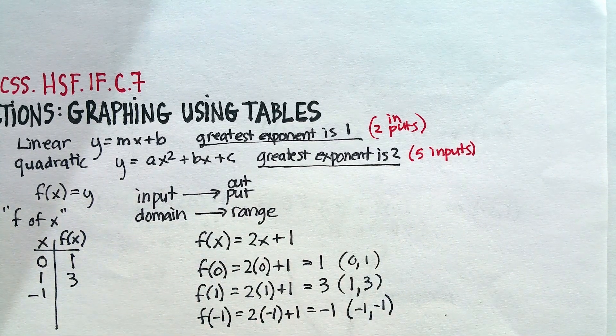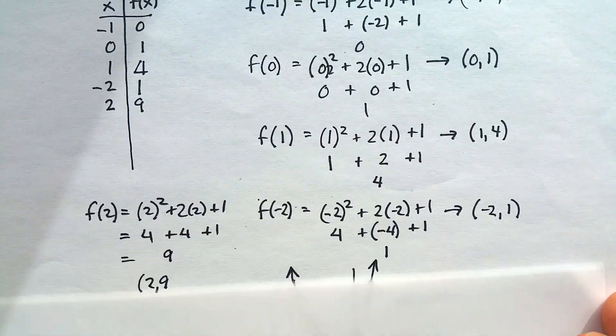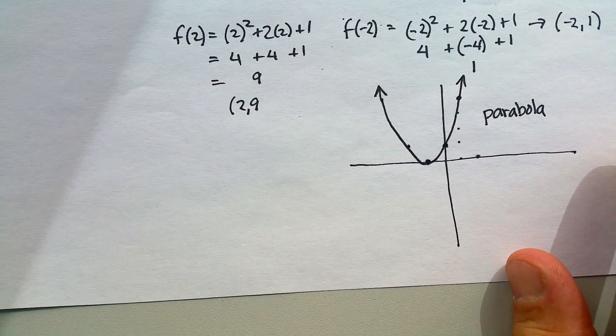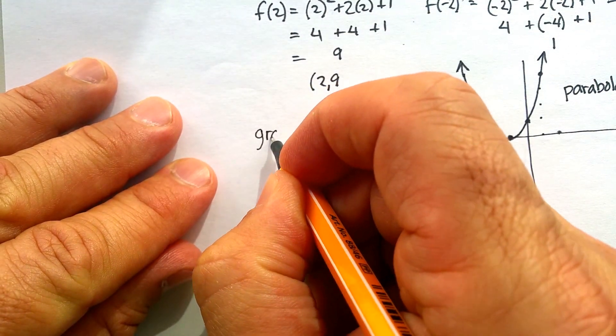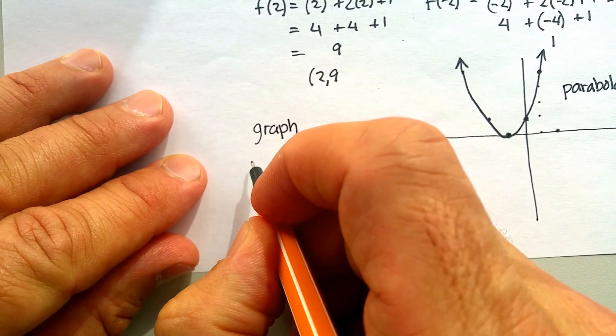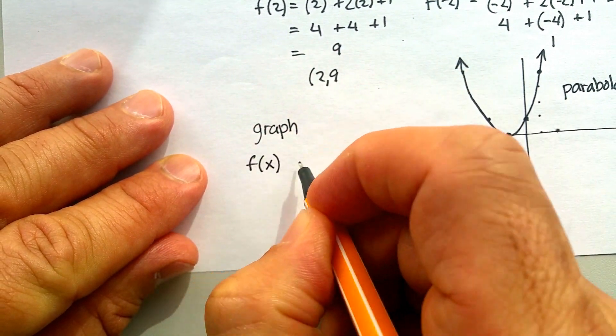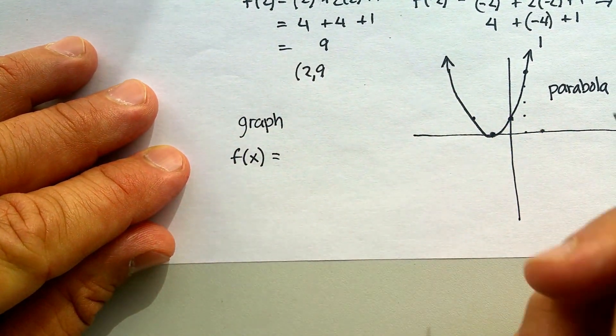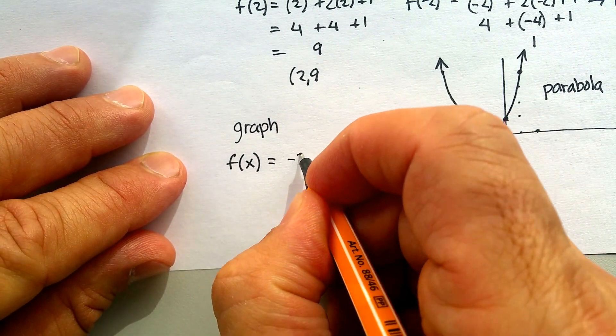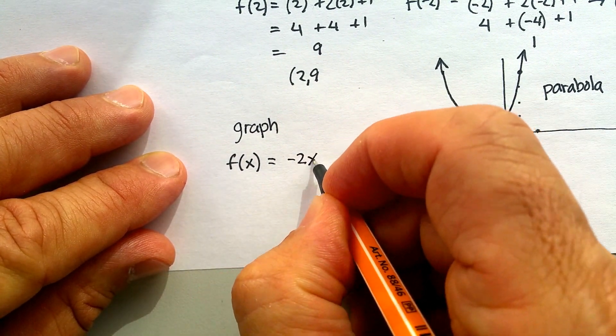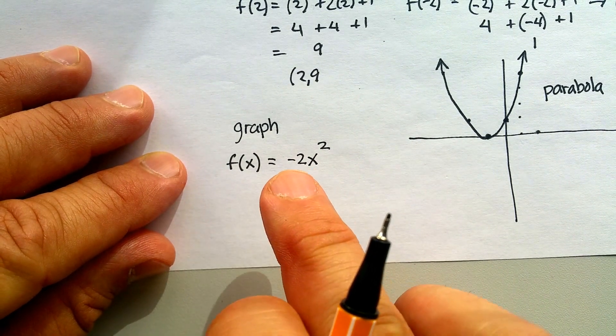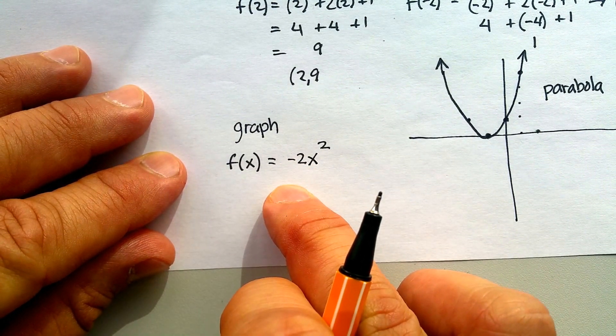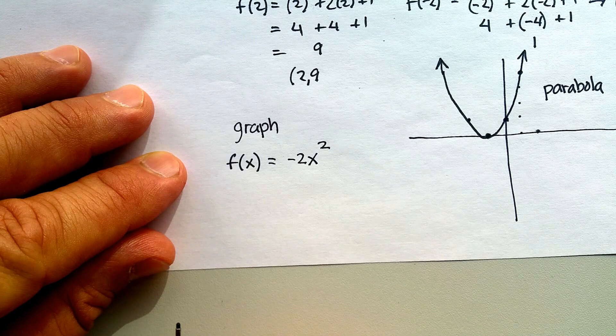Now, as a final thing, I want this problem. I want you to try this problem. I want you to graph the following. f of x is equal to negative 2x squared. Tell me what that's going to look like. Good luck.